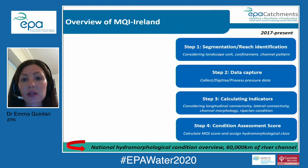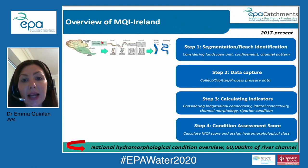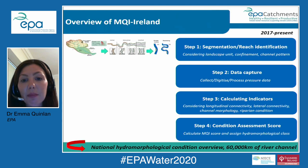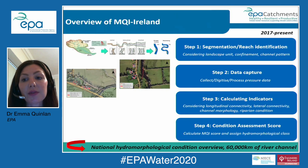That considers a landscape unit, it considers confinement — the presence and position of the channel within a floodplain — and channel patterns: whether the channel is straight, sinuous, or meandering. The next step looks at capturing hydromorphological feature data, which involves either extracting spatial data from third parties or manually digitizing where data is not available.